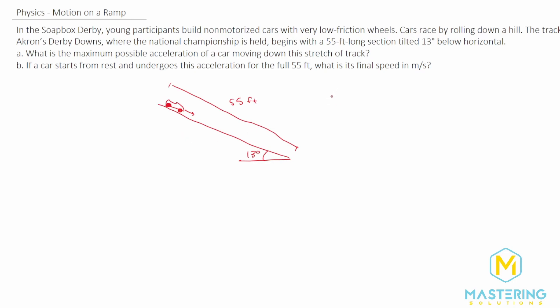So in the book they give us the acceleration for an inclined plane equation, which is a equals g sine theta. It's really helpful to understand where this comes from. We know gravity always pulls straight down, so we can call that g. If we break this vector up into its X and Y components,